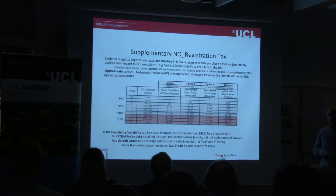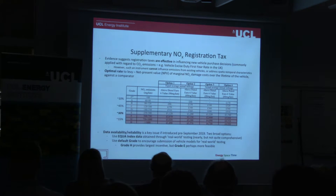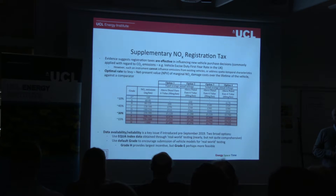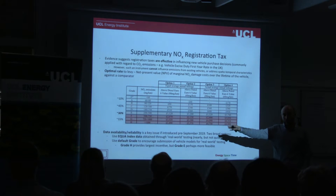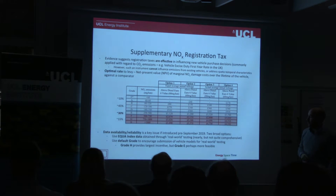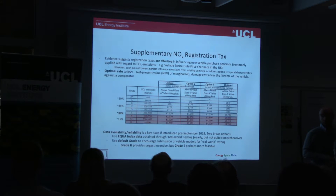Another option is to use a default grade into which every vehicle would be assigned unless it can prove using independent data that it should be assigned to a preferential grade. Grade H would provide the greatest incentive, charging vehicles between £3,500 and £5,000 upon purchase — but that may not be politically feasible. Since only 15% of vehicles are above grade E, it could be suitable to simply apply grade E as the default level, particularly since grades F to H will supposedly be removed from the market from 2019.